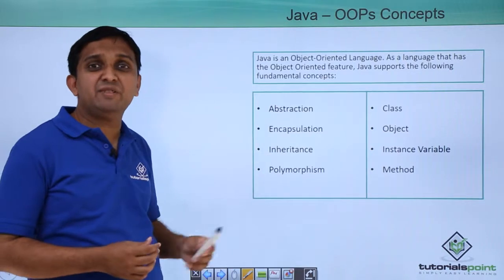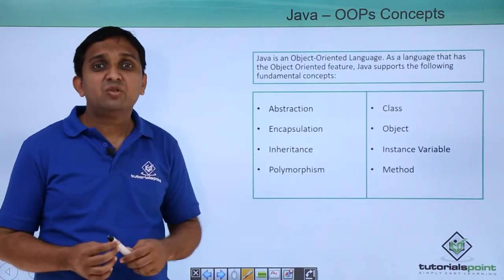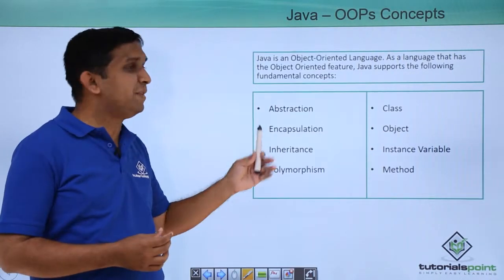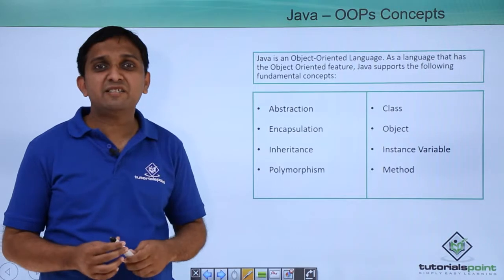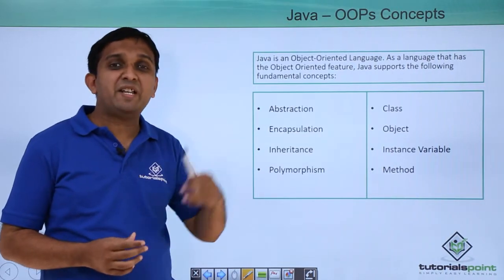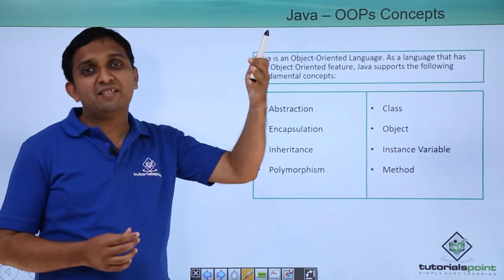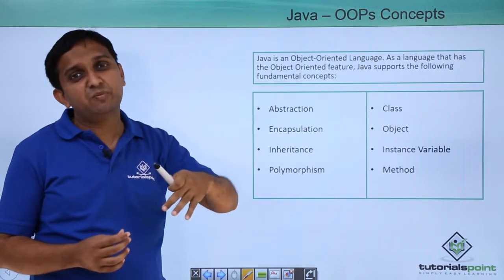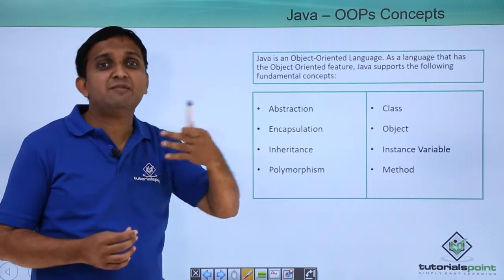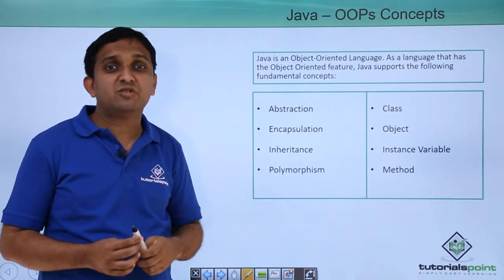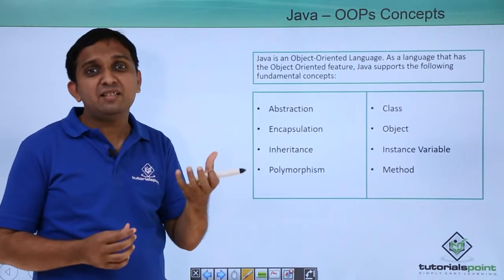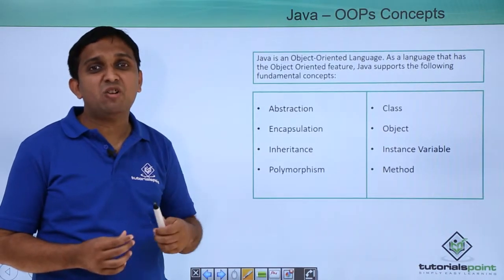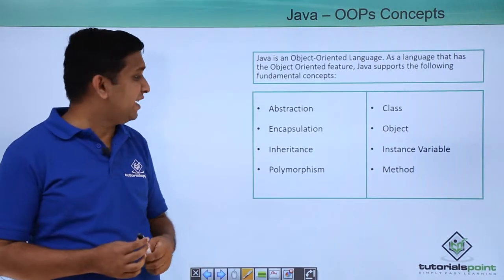Inheritance refers to the parent-child relationship. It can be implemented using the extends keyword in Java. The parent will have some characteristics, and the child will have all the characteristics of the parent plus its own characteristics. So it is inheriting characteristics from the parent — that is called Inheritance.